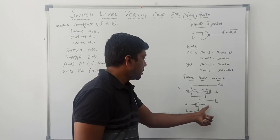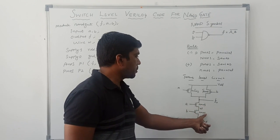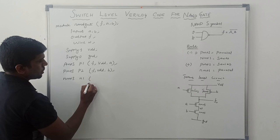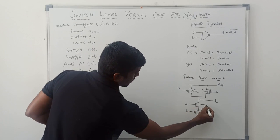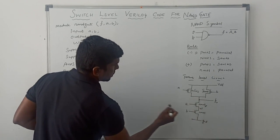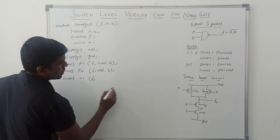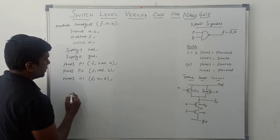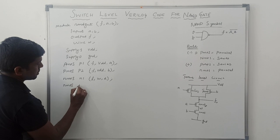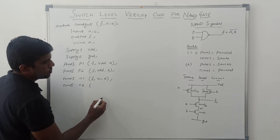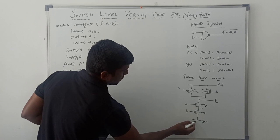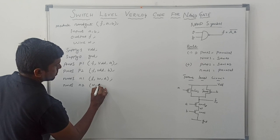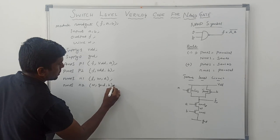Now, I am going to instantiate these two NMOS transistors. NMOS NMOS1. Here, output is F. Then W and A. W comma A. Come to the second NMOS transistor, NMOS N2. Here, ground and B is the input signal. W is the output. W comma ground comma controlling input B.